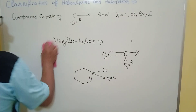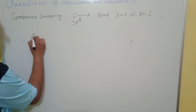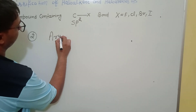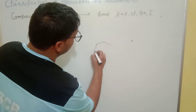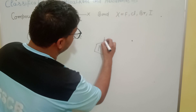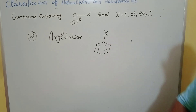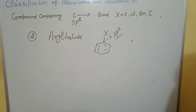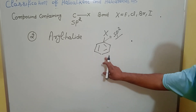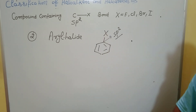The second sub-classification under sp2 CX bond is aryl halide. When a benzene ring is directly attached to a halogen, the carbon bearing the halogen is sp2 hybridized. This form is called the arylic (aryl) form of halide.